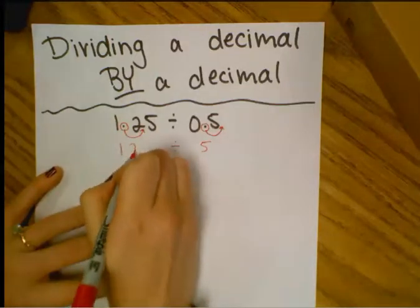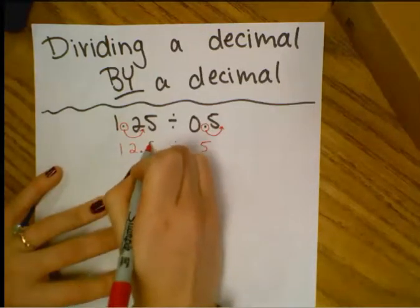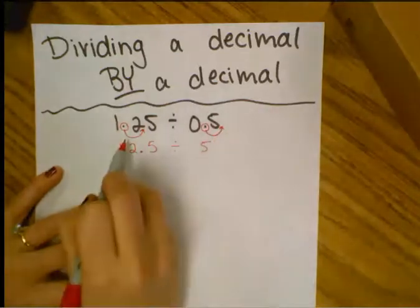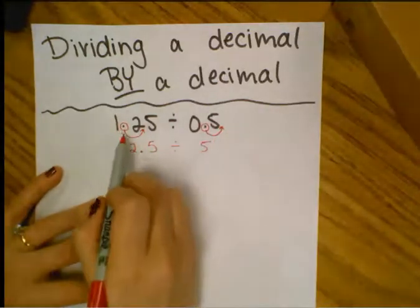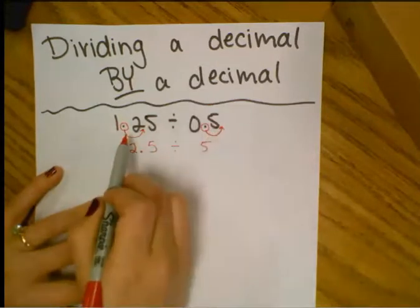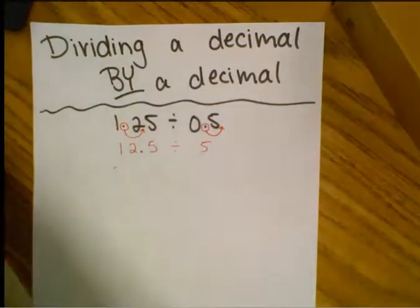So that would make this 12 and 5 tenths. So only one move here equals only one move here. You don't just want to move it all the way to the end. Whatever I do with my divisor, that's what I do over here. Now I can go ahead and try this problem.